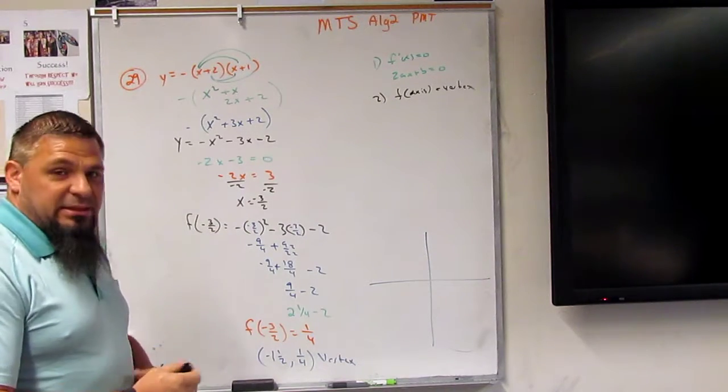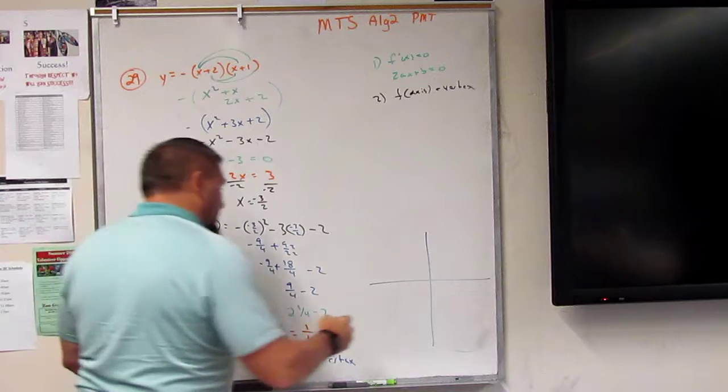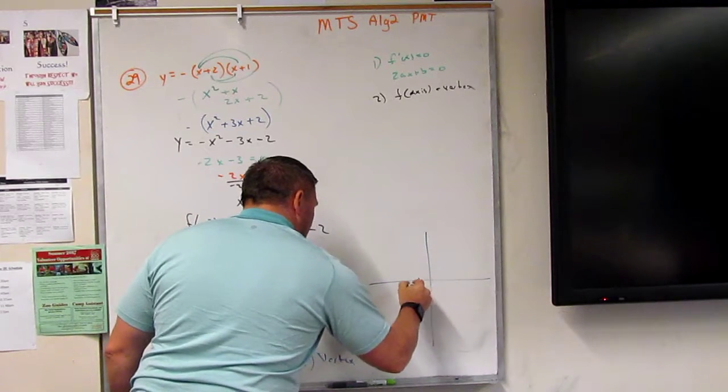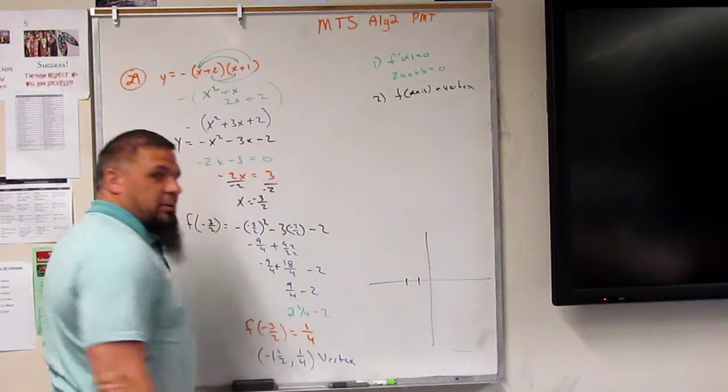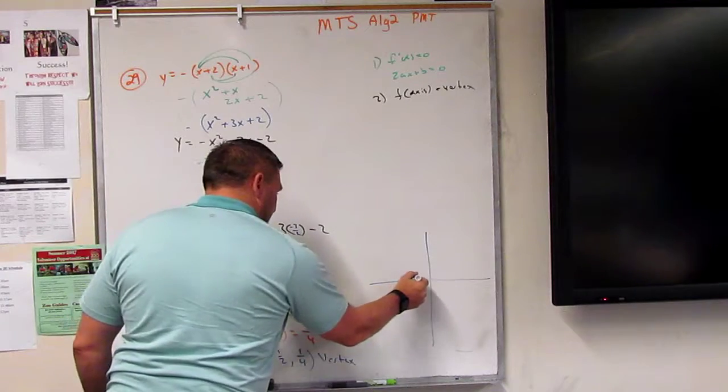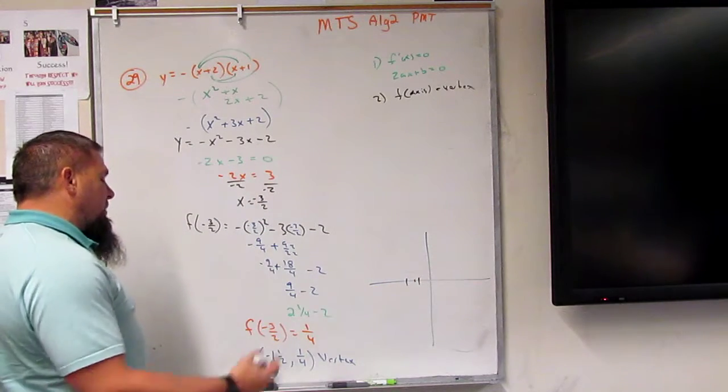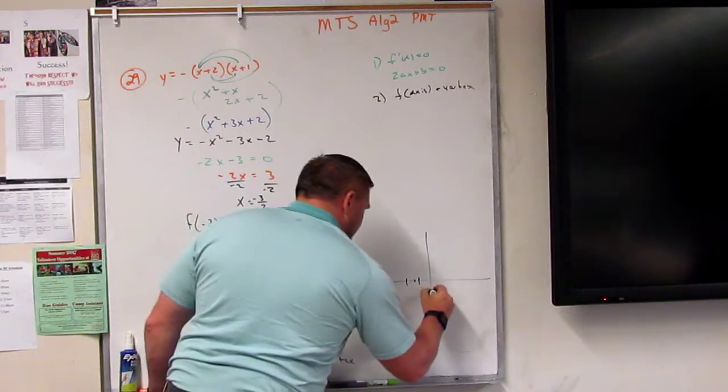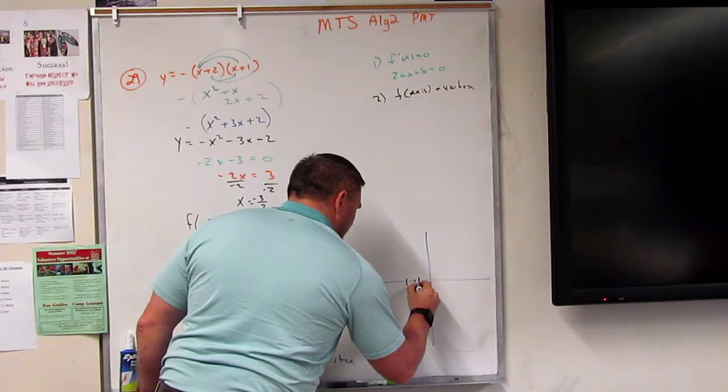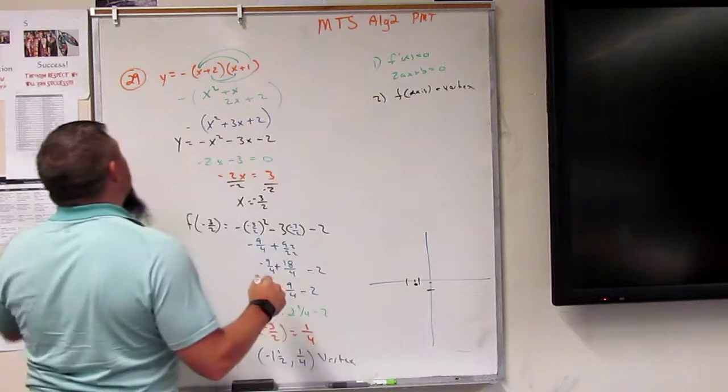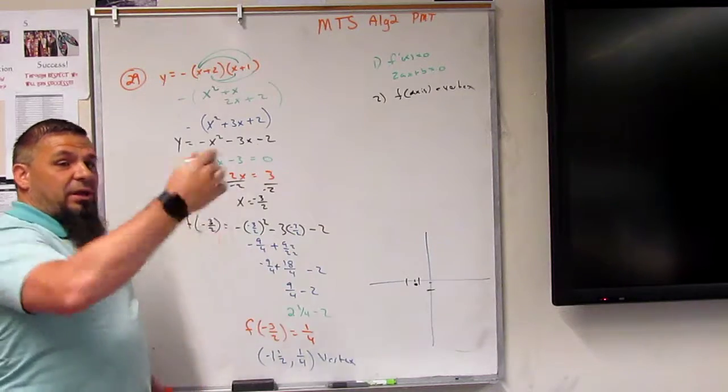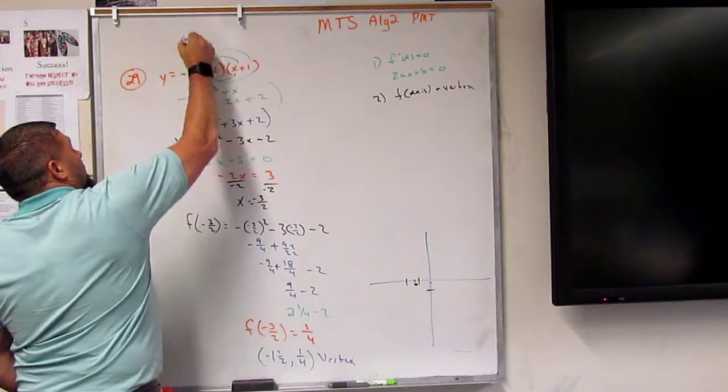Now, this is kind of a nasty graph, right? Because we're going negative 1 and a quarter. So about here-ish, right? And then down a quarter. So if this is 1, then I'm going down a quarter. So right there. Now, this is a negative, so it should be frowning, right? Boop, boop.